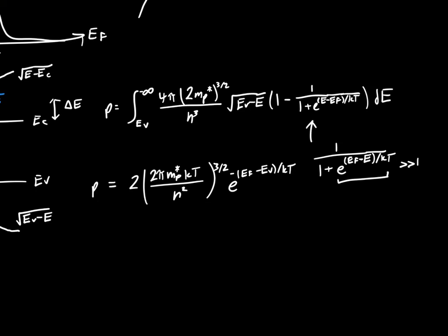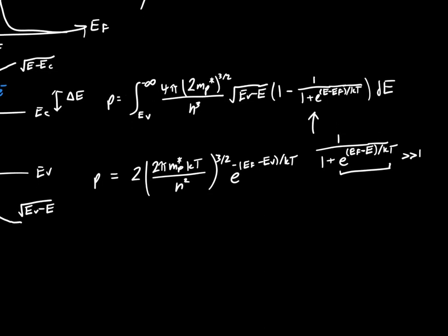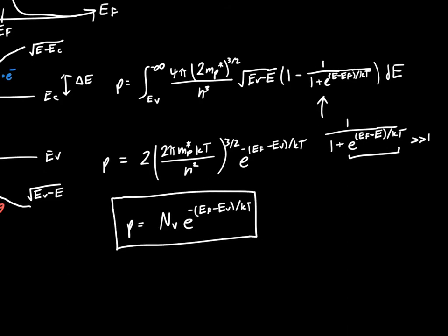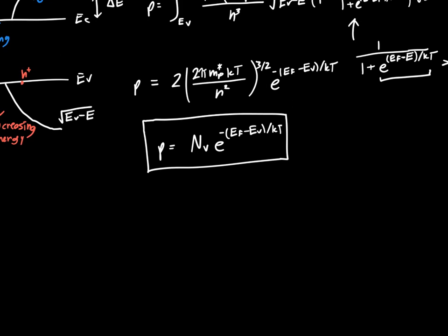e to the minus (EF minus EV) divided by kT. You might guess again that all these constants are kind of ugly, so I'm just going to group them all into one: p equals NV, the effective density of states in the valence band, times e to the negative (EF minus EV) over kT. This is our final expression for the number of holes.